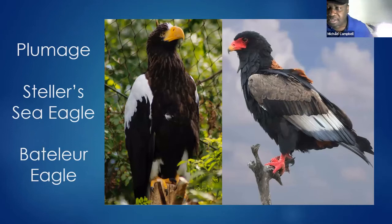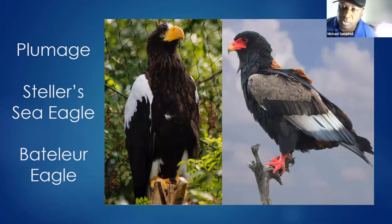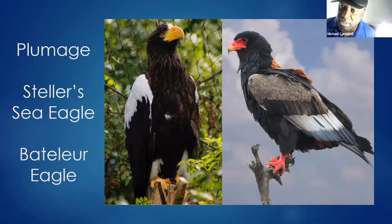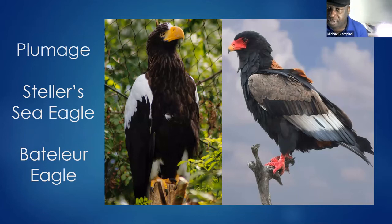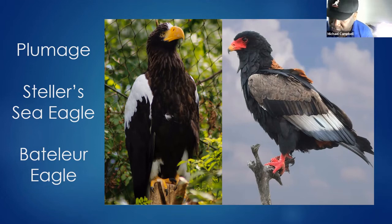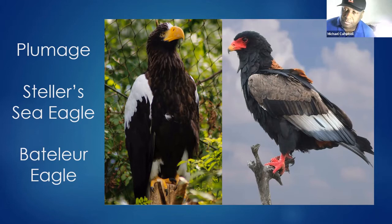The plumage of eagles varies greatly. This is the Steller's sea eagle, the heaviest eagle in the world, found in Eurasia from Russia to Japan. It has distinctive white and black plumage and a very large yellow bill. We've also got the bateleur eagle in Africa, which has bright red coloration and characteristic head feathers. Very few hawks have such distinctive coloration. The bateleur has red feet with scaly legs for killing reptiles, and the Steller's sea eagle has scaly yellow feet for grasping fish.